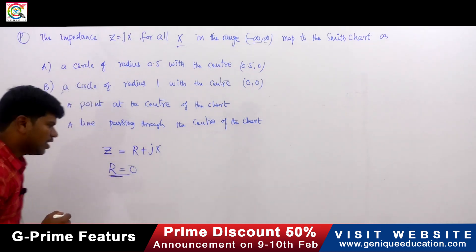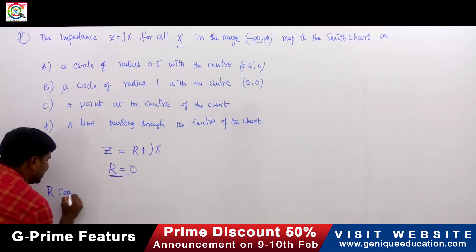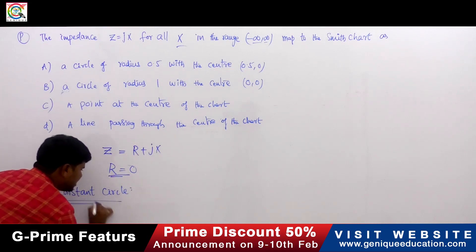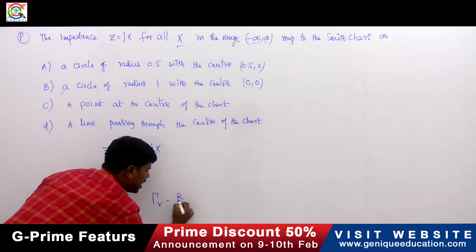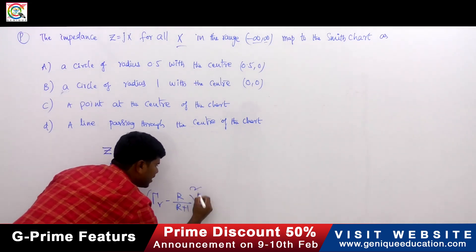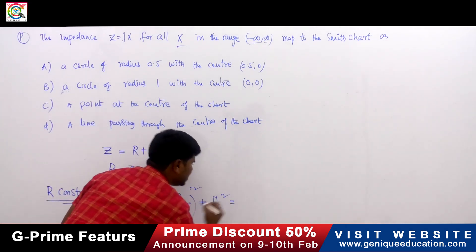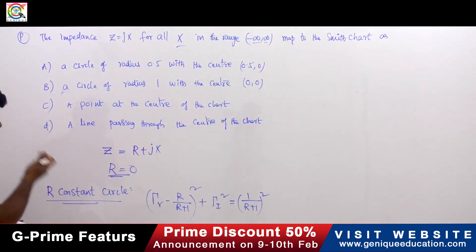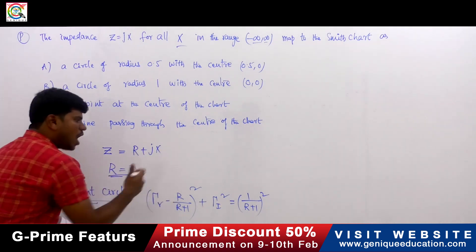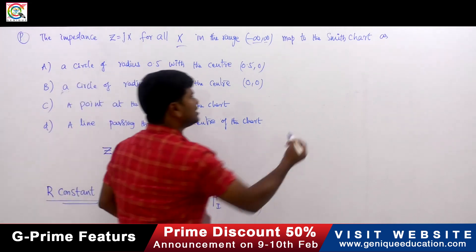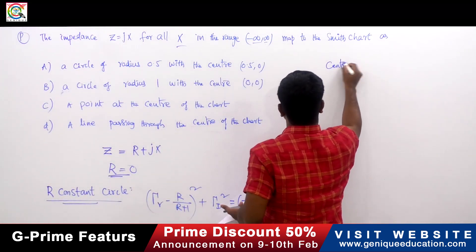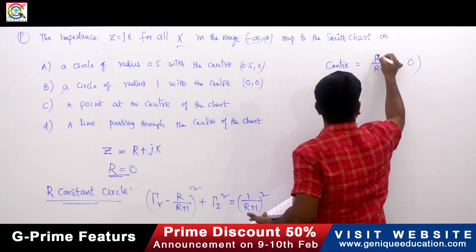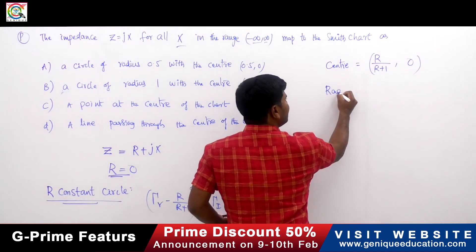For the R-constant circle, the equation is: (γ_R − R/(R+1))² + γ_I² = 1/(R+1)². From this, the center is R/(R+1) comma 0, and the radius is 1/(R+1).